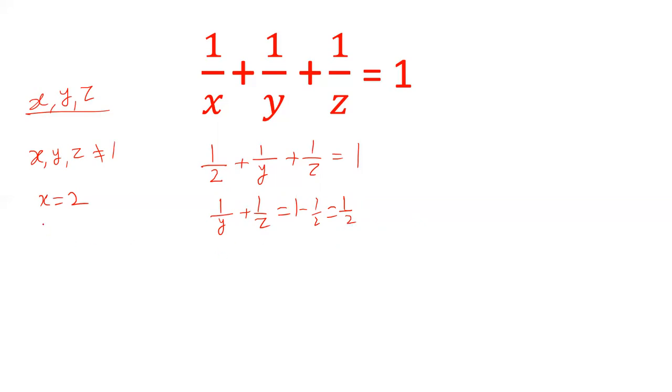Now let's take the next integer, because we cannot take the same value. Let's take 3 here. So 1/3 + 1/z equals 1/2. So 1/z equals 1/2 minus 1/3, which is 1/6. So z equals 6.